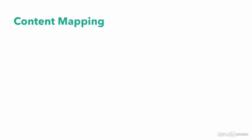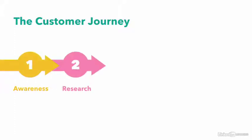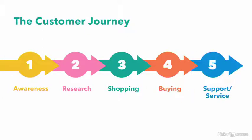Let's walk through content mapping so you can start to use it right away. Content mapping starts with defining the key phases or steps in your customer's journey. A typical customer journey includes an awareness phase, a research phase, a shopping and buying phase, and a support or service phase.